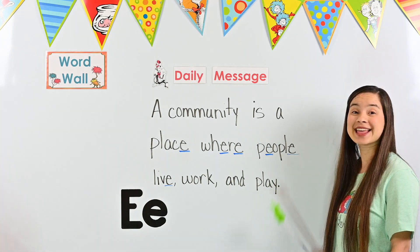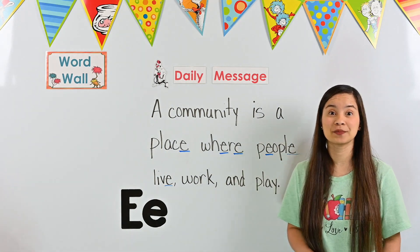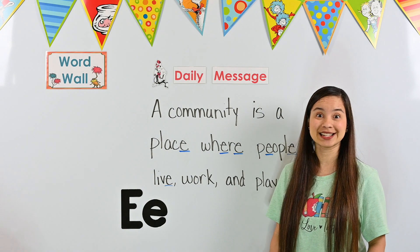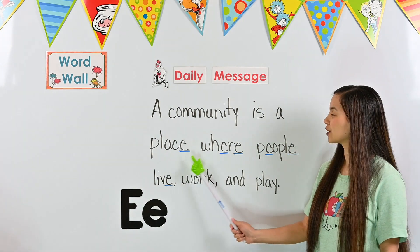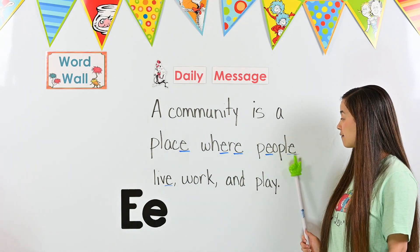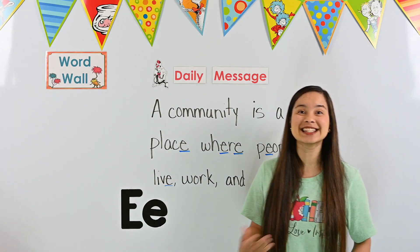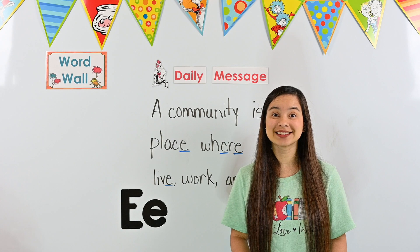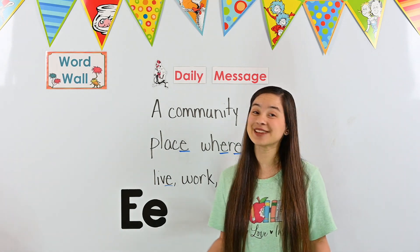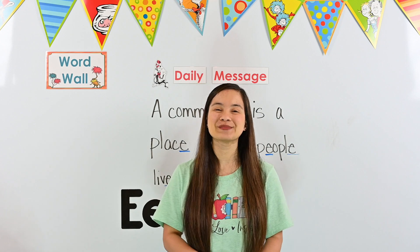Oh, here's our period. That means our sentence is over, and there are no more words, so our message is over. Wow, we found a lot of E's today. Let's see how many E's were in today's message. Count with me: one, two, three, four, five, six. We found six E's in today's message. Did you find all six? If you did, fantastic work. And if you didn't find all six E's, it's okay — as long as you tried your best.